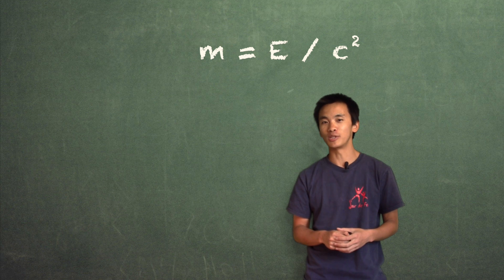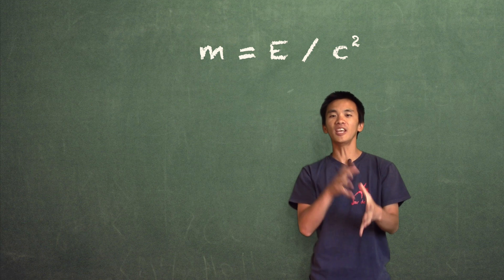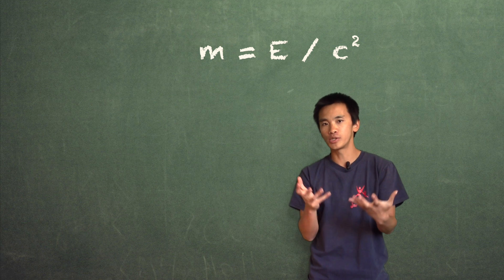m equals e divided by c squared. And by the way, this is the real deal. It's the real equation. It's not e equals mc squared. Of course, these two are equivalent.